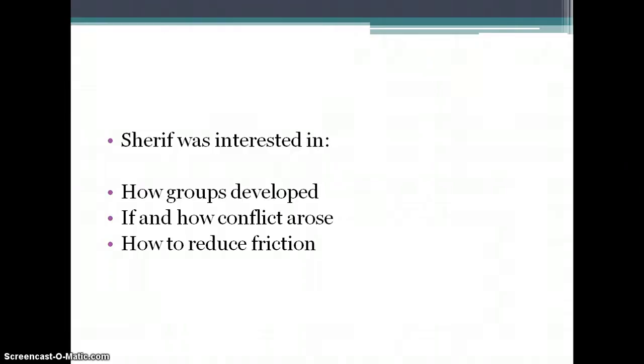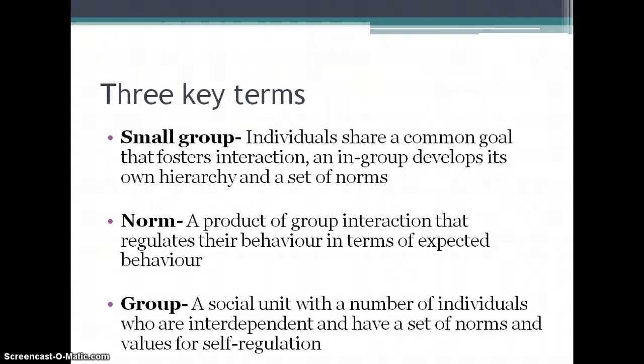There are three key terms we need for this study. A small group is a group of individuals who share a common goal and have fostered some sort of interaction — very much an in-group from Tajfel — and it normally has its own hierarchy or set of norms. A norm is the product of group interaction; it's basically a set of behaviour that is expected or seen as normal. And finally, a group is a social unit with a number of individuals who have a set of self-regulated norms.